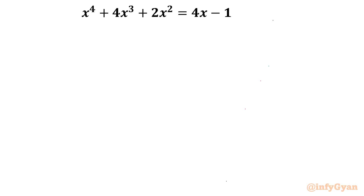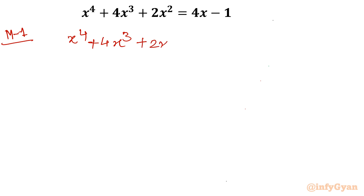So let me write method number one. I will write all the terms towards the left hand side first: 4x cubed plus 2x squared minus 4x plus 1 equal to 0.